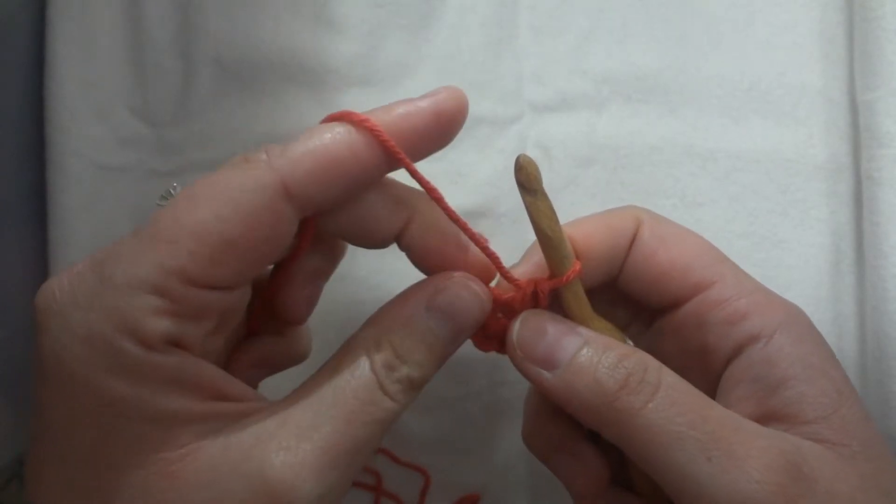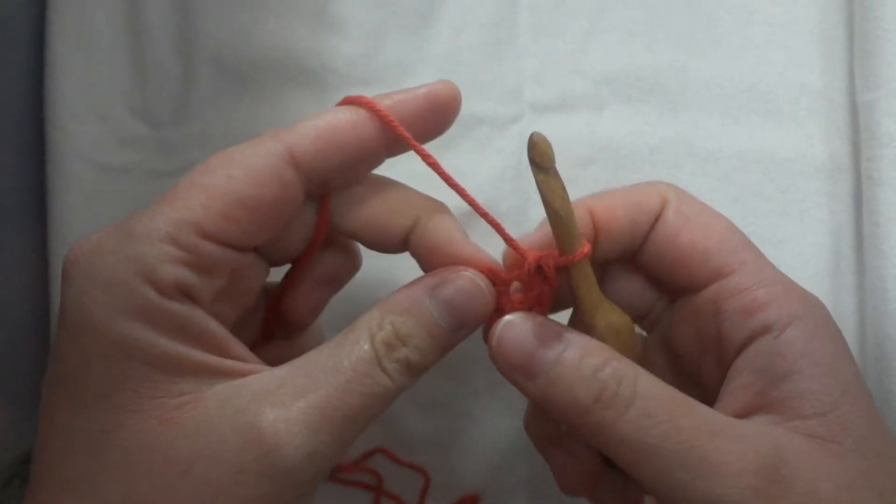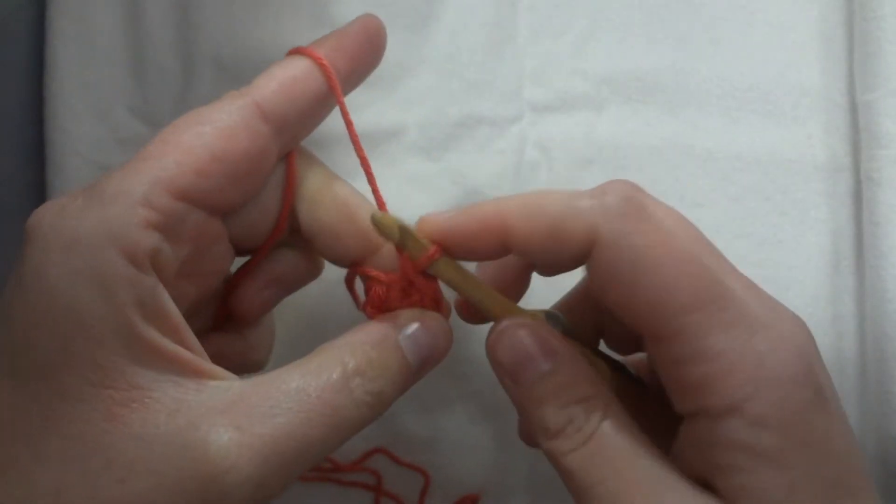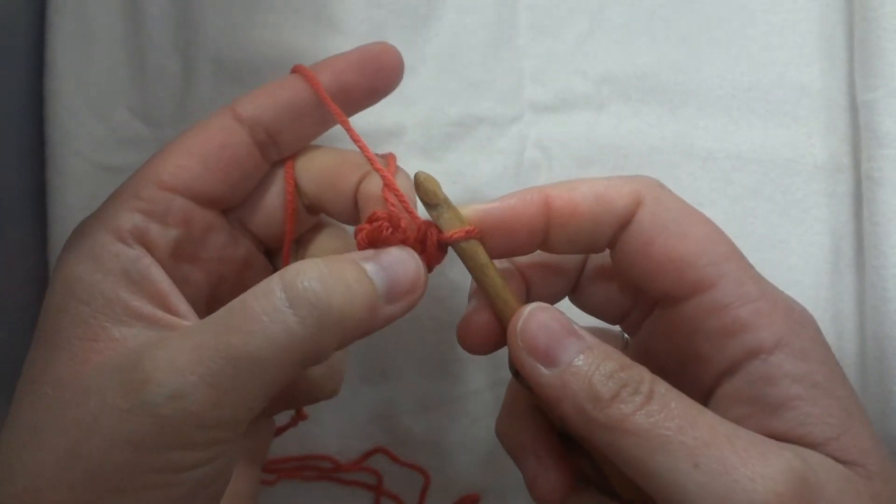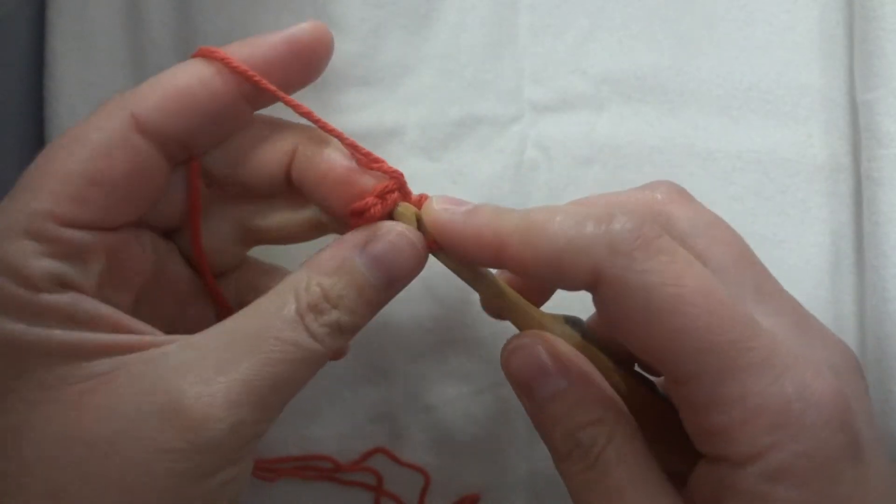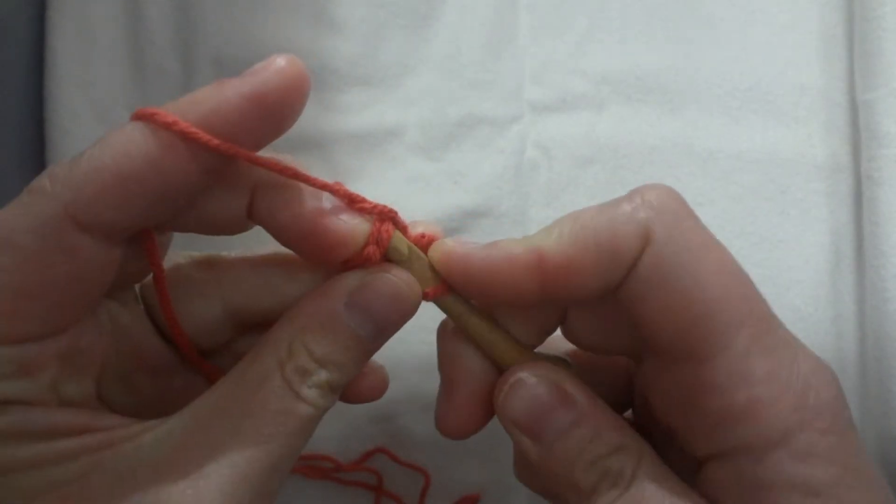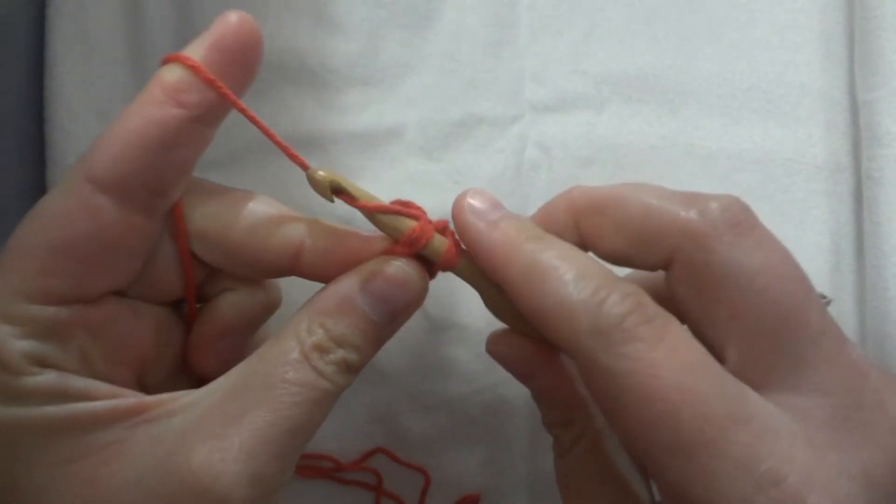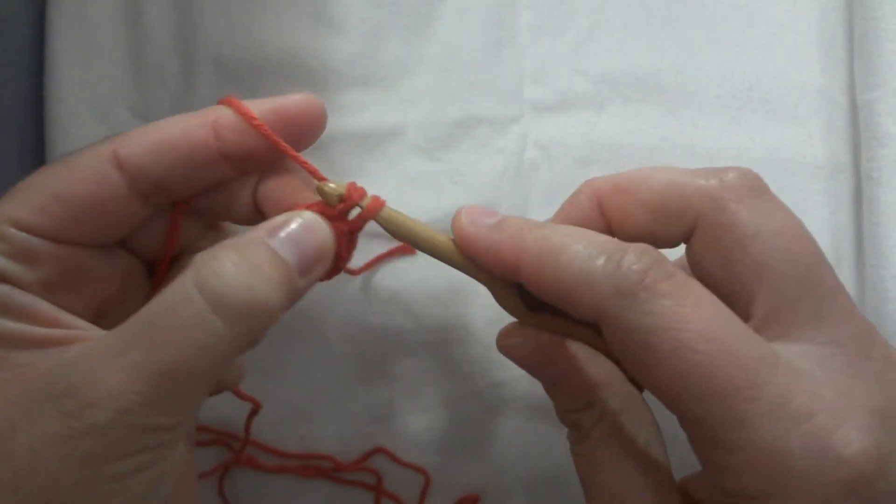So if I'm going to work in a spiral, first of all I'm going to take this end and I'm going to pull it tight. That's going to close up my circle, so see there's just hardly any hole there. And then I'll put my hook into my first single crochet and actually just single crochet in that.